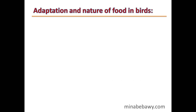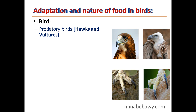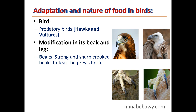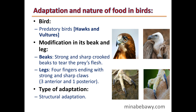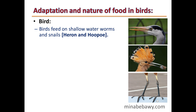Adaptation and nature of food in birds – Example 1: Predatory birds such as hawks and vultures. Modification in beak and legs: They have strong, sharp, crooked beaks to tear prey's flesh. Their legs have four fingers ending with strong, sharp claws — three anterior and one posterior — to grip prey. Type of adaptation: Structural adaptation.